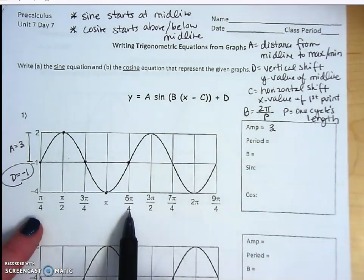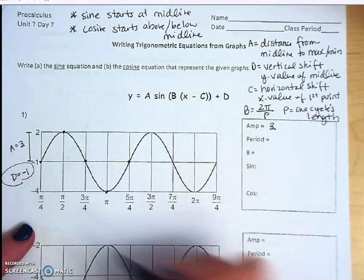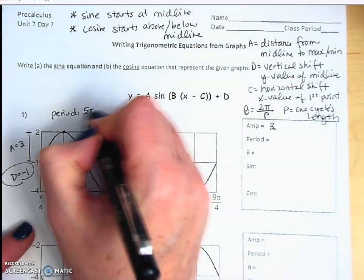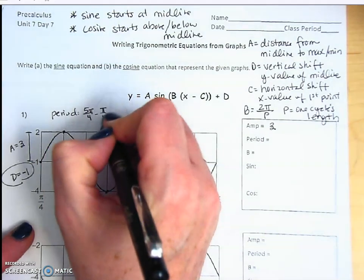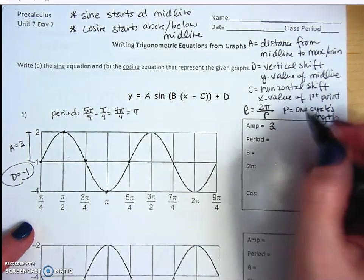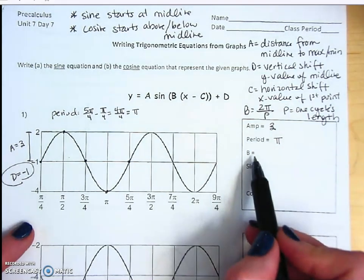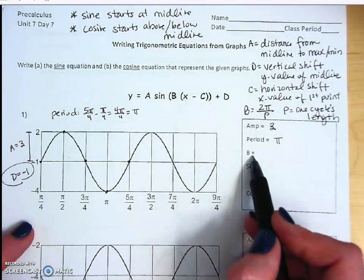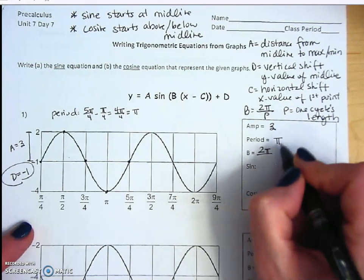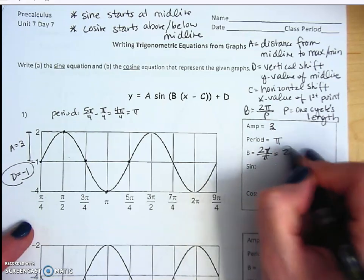The five points span from pi over 4 to 5 pi over 4, so the period length is 5π/4 minus 1π/4, which equals 4π/4, or just π. Now I use that to find b: the formula is 2π over the period. Our period is π, so those pi's cancel, giving b equals 2.